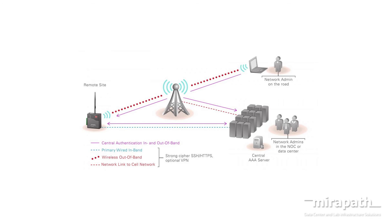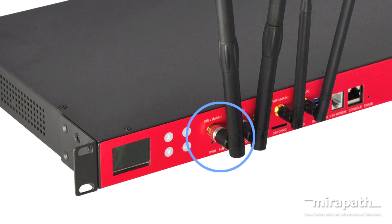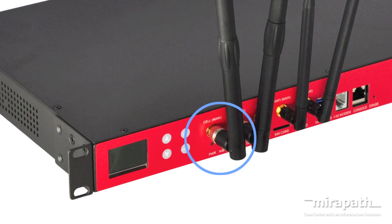Some console servers have wireless capabilities. So, instead of using a traditional analog line, you can use cellular connectivity via Verizon or AT&T.